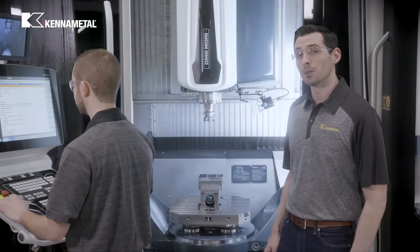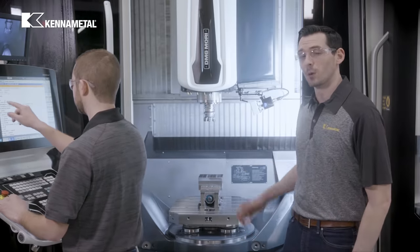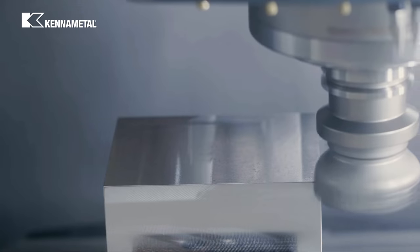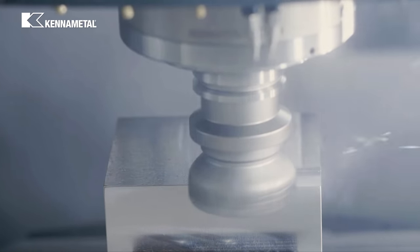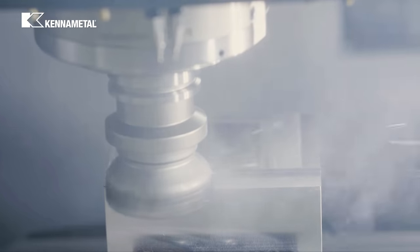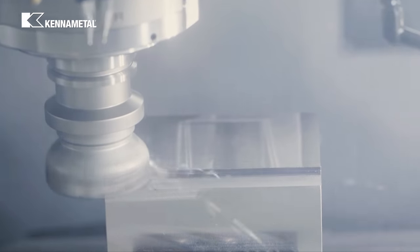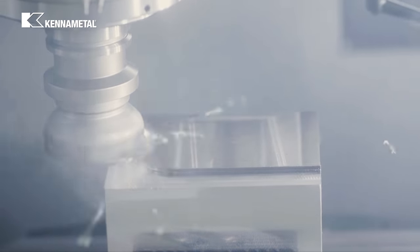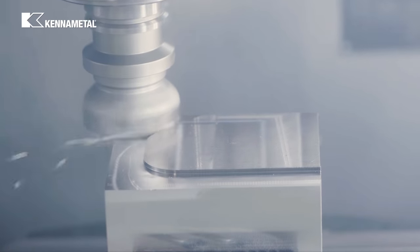We're going to start with a light cut on the periphery of this 3x6 inch steel block. We're doing two passes with an 80 millimeter diameter cutter with seven inserts.